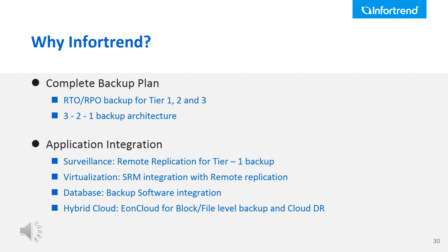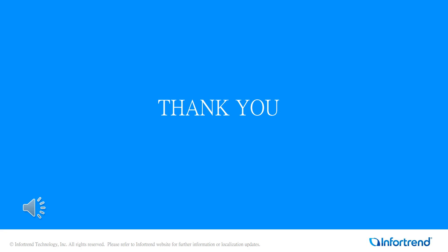In conclusion, the benefits of InfoTrain's systems for backup solutions are clear. First, InfoTrain provides a complete backup plan — our systems support from Tier 1 to Tier 3 RTO and RPO backup requirements and the 3-2-1 backup architecture. Second, InfoTrain's backup plan is integrated with enterprise IT environments such as surveillance, virtualization, database, and hybrid cloud. We hope that you've learned about InfoTrain's solutions for backup. Thank you very much, and we hope to see you in the next discussion.